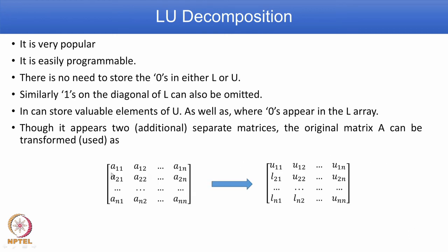The given matrix A, from A11 to Ann, is replaced with the combined L and U storage. The diagonal stores U11 through Unn, the upper part stores U matrix elements such as U12, and the lower part stores L matrix element values. Hence, the given coefficient matrix A itself is used to write L and U, making it easier to program and very popular for solving any matrix system.